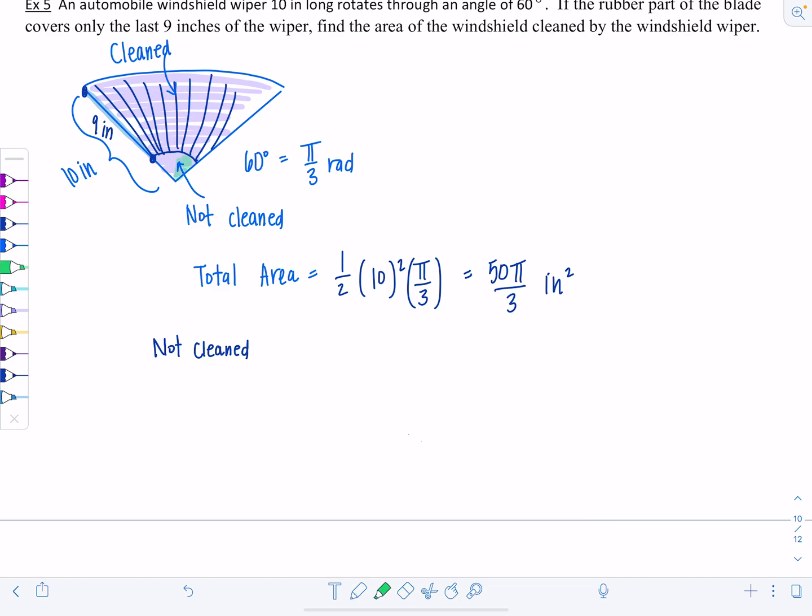How much is not cleaned? It's going to be one-half. What's the radius there? It's only one inch, because all the way is 10 inches. The rubber part is the last nine inches. So one squared times π over 3. One-half times π over 3, that's going to be π over 6 inches squared.